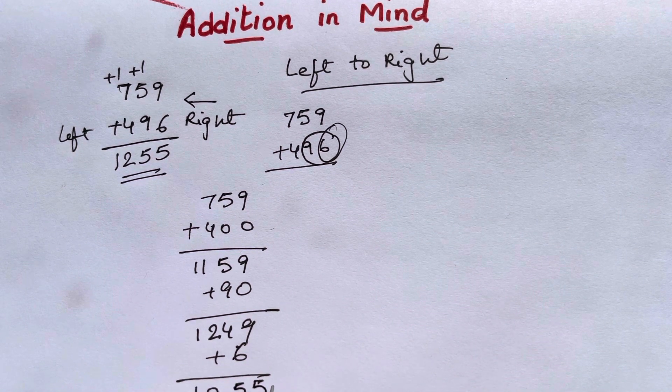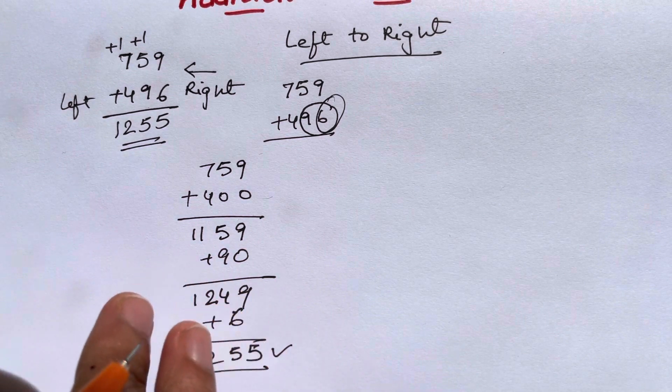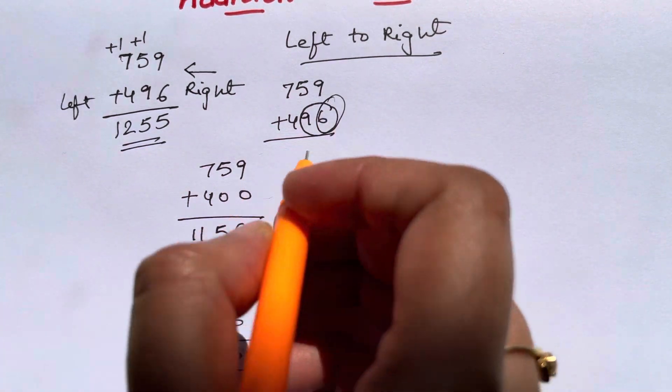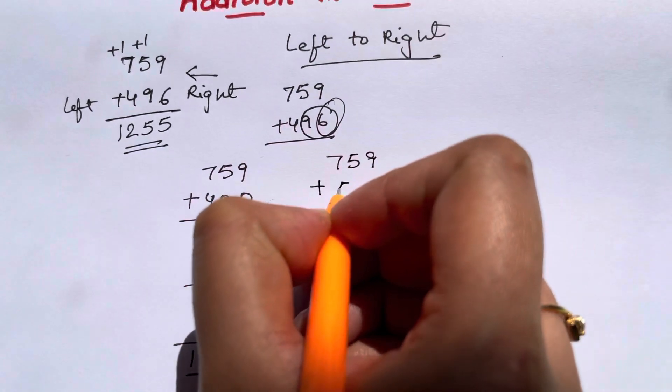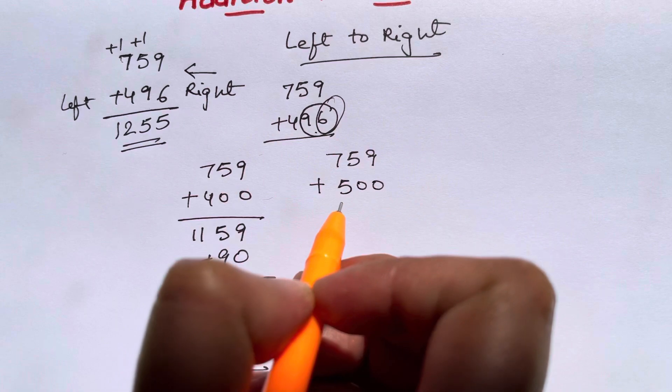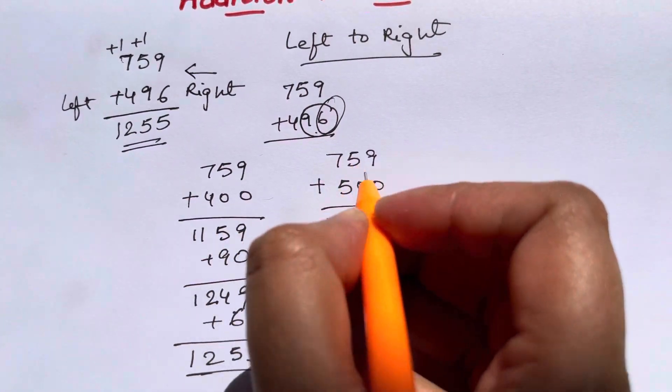This is how you do it in mind from left to right. Now let me show you the other way around. 759 plus 500. You can round off 496 to 500, and 7 plus 5 will give you 1259.